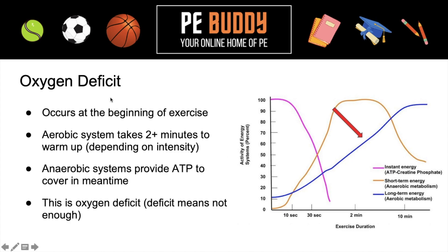We're going to start with oxygen deficit. This occurs at the beginning of exercise because the aerobic system takes about two minutes to warm up, depending on the intensity and type of activity. In the meantime, the anaerobic systems — we have two: the ATP-PC and the anaerobic glycolysis system — they provide ATP. This is what's known as oxygen deficit. Deficit just means not enough.